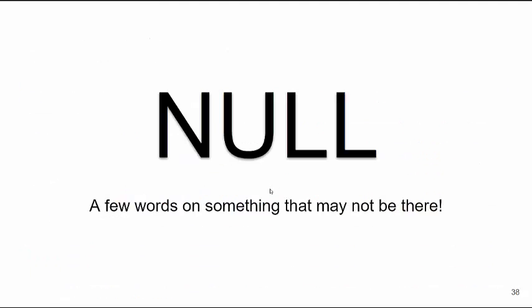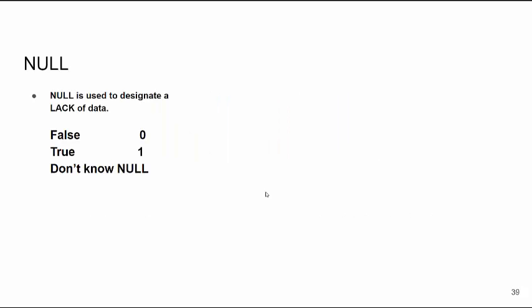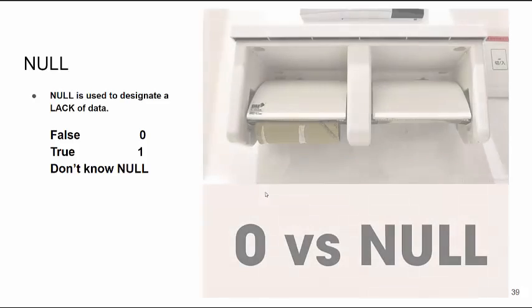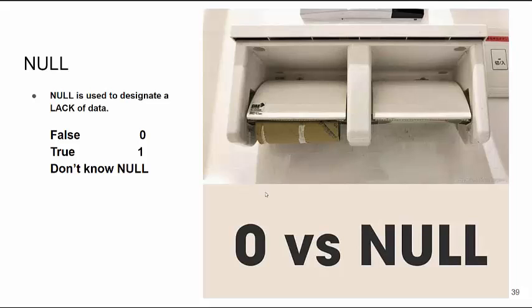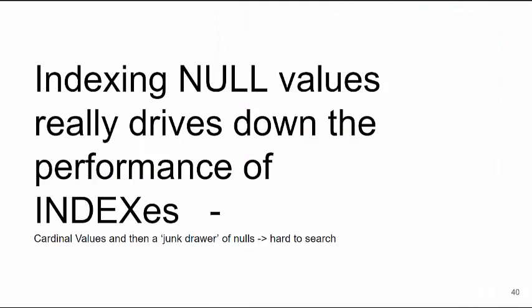NULL — an interesting concept. In the early days of databases, you had 1 if something was true, 0 if false. But how do you symbolize that you don't have that data? So they came up with the idea of null — used to designate a lack of data. Indexing null values is really not a good thing. The optimizer has to go through those nulls separately to find information — not efficient. So don't index null values unless you absolutely have to.